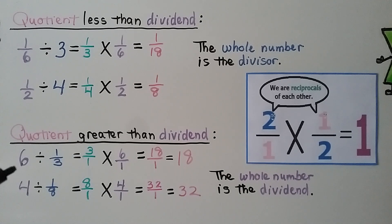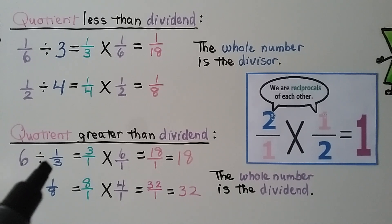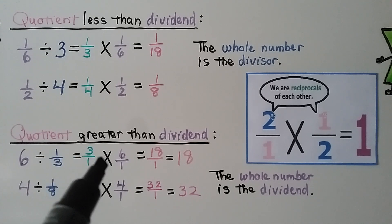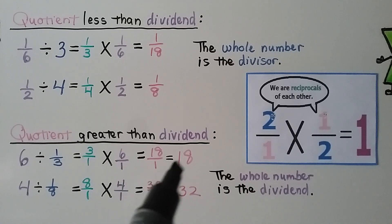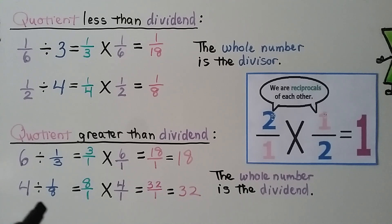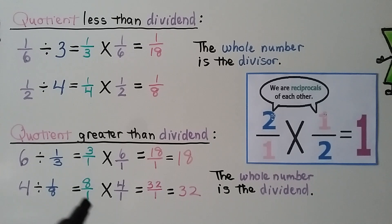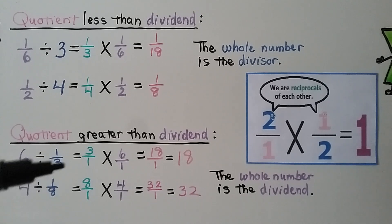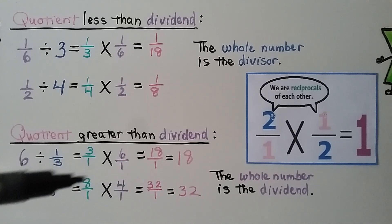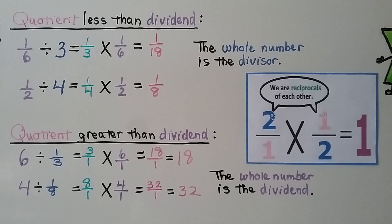For these examples where the quotient is greater than the dividend: 6 whole divided by 1 third — we multiply the reciprocal of 1 third, which is 3 over 1, by 6 written as 6 over 1. We get 18 over 1, which simplifies to 18 whole. For 4 divided by 1 eighth, we multiply the reciprocal of 1 eighth, which is 8 over 1, by 4 over 1. Multiplying straight across gives 32 over 1, which simplifies to 32.